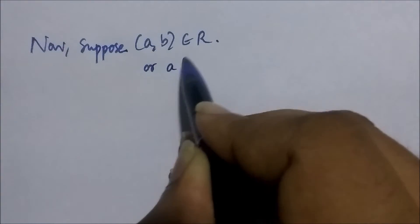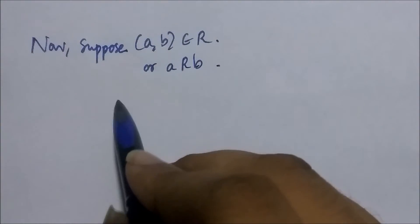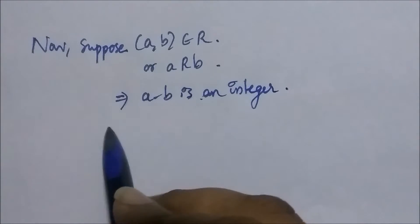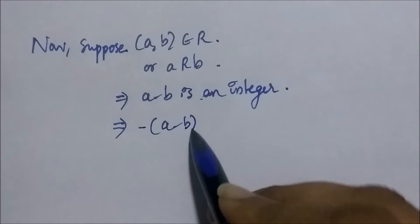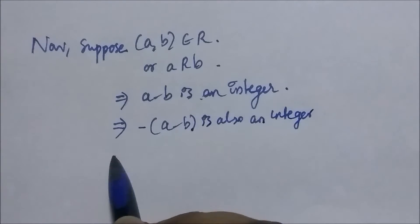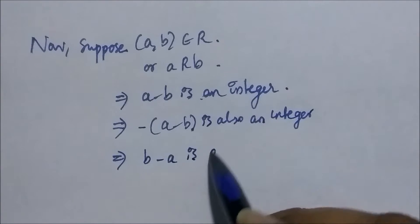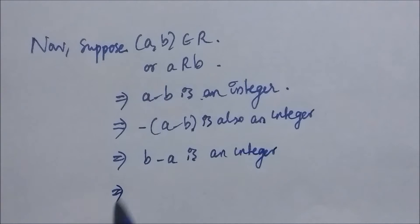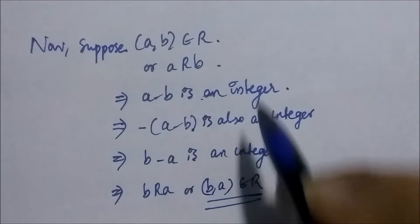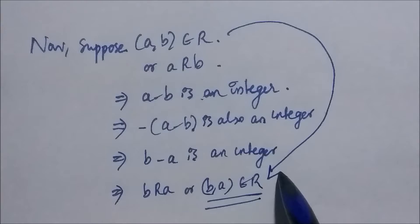Now suppose that A, B belongs to the relation — in other words, A is related to B — meaning that A minus B is an integer. Now A minus B being an integer implies that minus of (A minus B) is also an integer, which implies that B minus A is an integer, which implies that B is related to A. So the relation is symmetric.